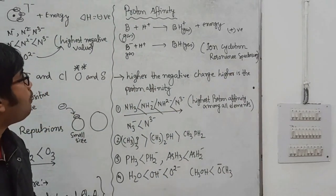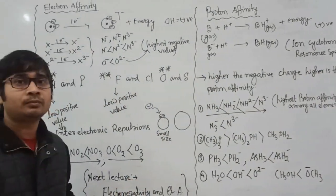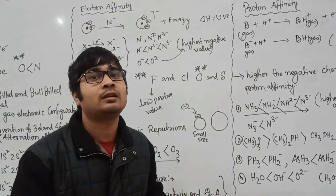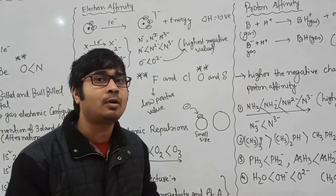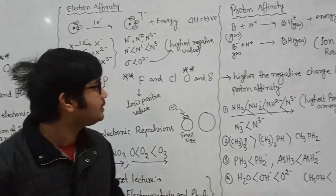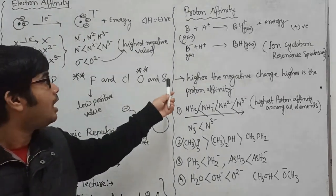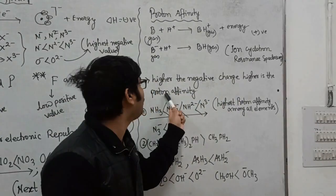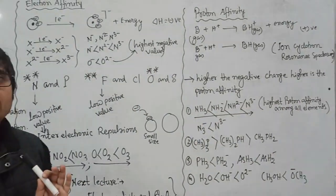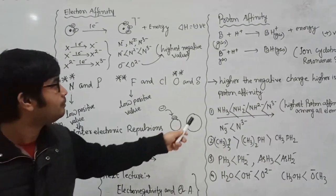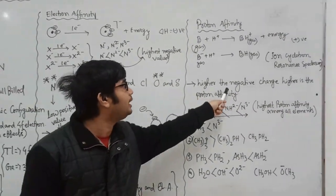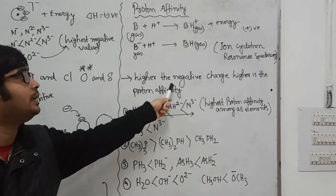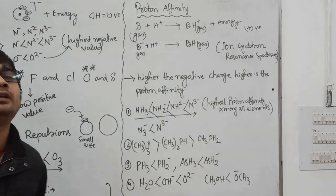What is the trend in proton affinity? There is a very clear rule: higher the negative charge, higher is the proton affinity. Let me repeat: higher the negative charge density, higher is the proton affinity.